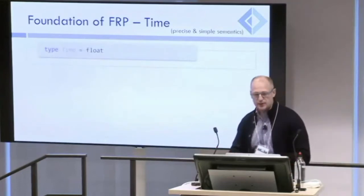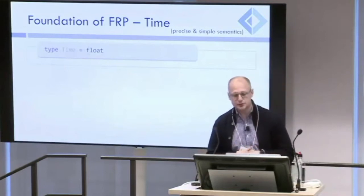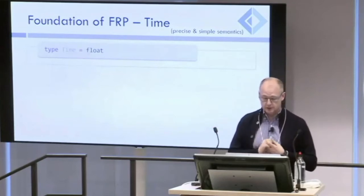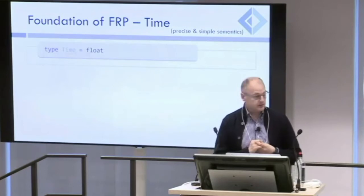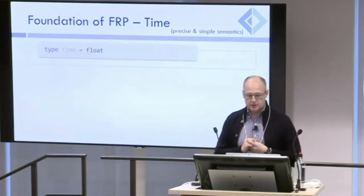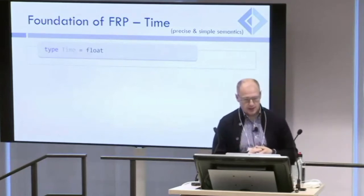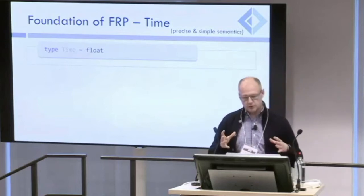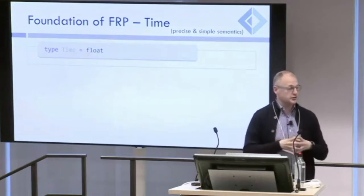Let's start to define the FRP data types used to model this paradigm. First, we have the notion of time — continuous time. It is denoted by the domain of time, which is synonymous with real numbers. In F-sharp, we use float. The choice of continuous time is used to make programs more composable compared to programs that use discrete time.